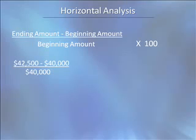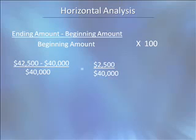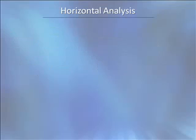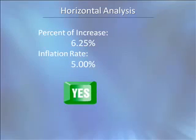The new salary is $42,500 and the current salary is $40,000. Thus the amount of change is $2,500. Divide the amount of change by the current salary of $40,000. Multiply by 100 and the answer is a 6.25% increase in salary. This 6.25% increase is more than the 5% inflation rate.